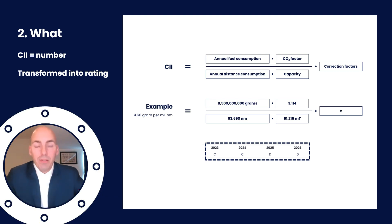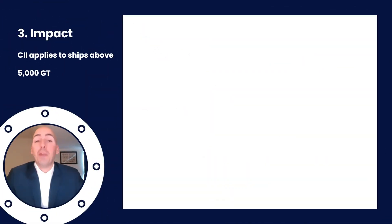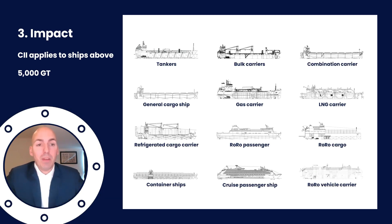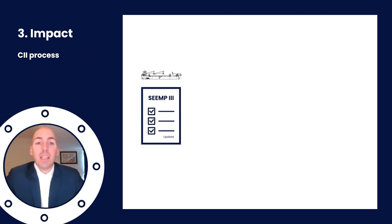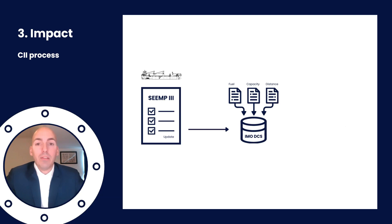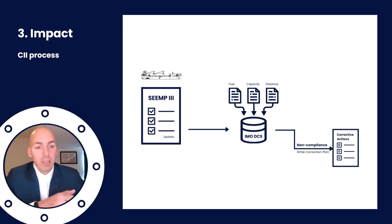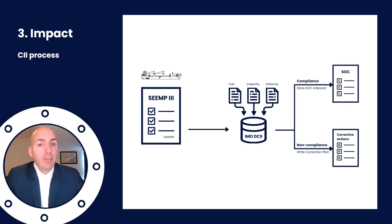So how does this affect your operations and what do you have to do? CII only applies to certain ship types with a gross tonnage above 5,000 — and if you're watching this video, that probably means it applies to you. If you have to comply with CII, your data will have to be verified yearly by a recognized organization like class, who will calculate the CII based on IMO DCS data and provide you with a rating. In case you have an E rating, or three D ratings in three consecutive years, you have a low rating and are non-compliant. In all other cases and ratings, you are compliant and you don't have to do anything.